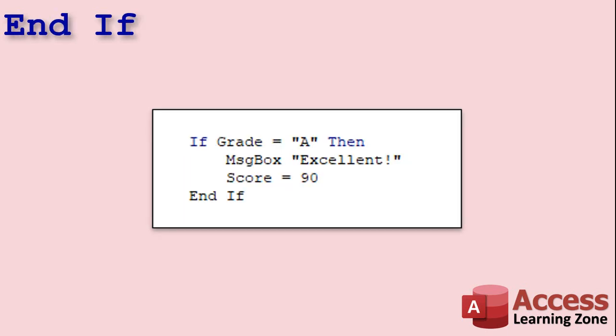If you want multiple things to happen, you want to issue multiple commands. If that grade is A, then we use multiple lines and the word End If to end that particular branch of the statement. So if grade equals A, then we're going to say excellent and we're going to set score equals 90. What is score? Could be another variable, could be a different field on your form, doesn't matter. Whatever score is, it's going to get set to 90, and then we're done.